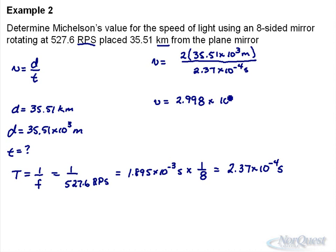This should give us a number of 2.998 times 10 to the 8, which should be very close to the accepted value in meters per second.